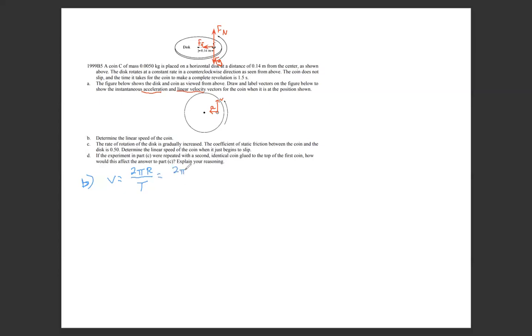That is 2 pi times 0.14 meters over 1.5 seconds, the time it takes to complete that orbit. If you do that calculation, it comes out to 0.5864 meters per second, which is about 0.59 meters per second.